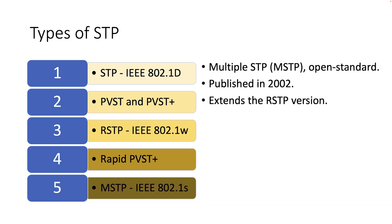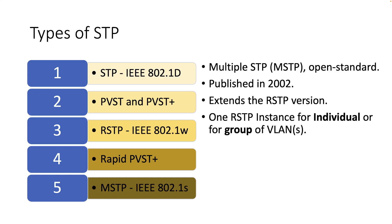Finally, in 2002, the Multiple Spanning Tree Protocol or MSTP was specified in the IEEE 802.1S standard to define an extension to Rapid STP to further develop the usefulness of VLANs. Under MSTP, a spanning tree instance can be mapped for individual VLANs or for groups of VLANs. The spanning tree algorithm used by MSTP is Rapid STP, which provides quick convergence, and it supports up to 16 instances of RSTP where each instance can contain one or multiple VLANs.